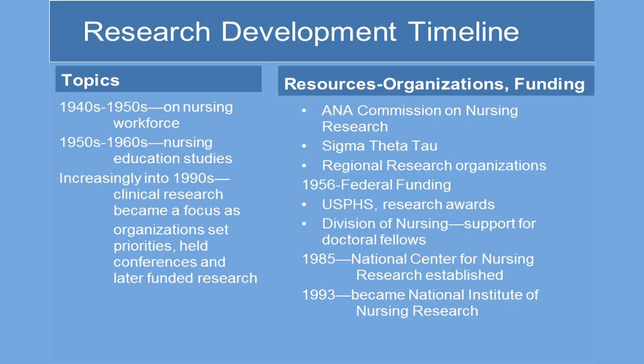Regarding resources, early on the American Nurses Association Commission on Nursing Research was hugely important, as was Sigma Theta Tau International. Regional research organizations were developed. In 1956, we have the first federal funding — the U.S. Public Health Service research grants were available, and the Division of Nursing provided support for doctoral fellows. In 1985, the National Center for Nursing Research was established, and by 1993 it became the National Institute of Nursing Research.